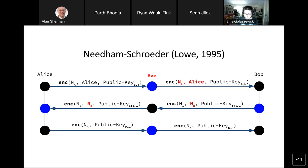Binding issues have been plaguing protocols for a long time. In 1978 there was a medium-Schroeder public key protocol with this problem. In 1995, Lowe was able to use formal methods — representing the protocol in Communicating Sequential Processes — to find this. The reason I'm bringing up formal methods tools is that this is very hard to find by hand, because protocol interaction involves two or more protocol instances, which is hard for us to track in our brains.